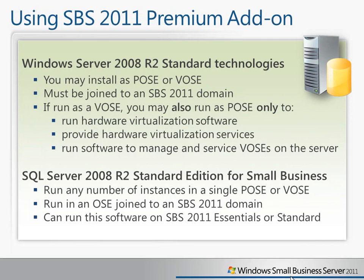When using the Premium add-on, just like Essentials and Standard, you can run it as a physical machine or a virtual machine, but it must be joined to an SBS 2011 domain. You must run it with a copy of Standard or Essentials — you cannot run it separately outside of an SBS environment. If you choose to run it as a virtual operating system environment, you may also run it as a physical operating system only to provide hardware virtualization software, such as Hyper-V, to manage and service the virtual machines on the server.